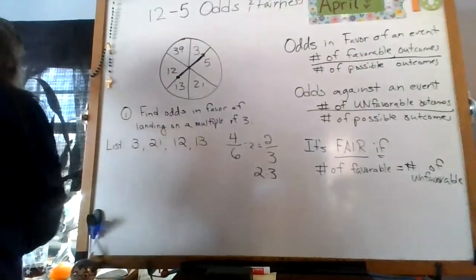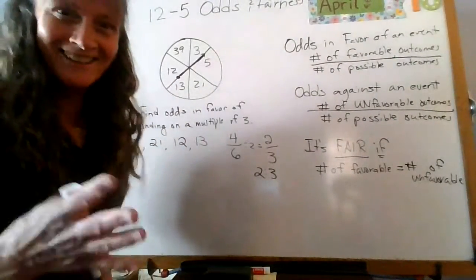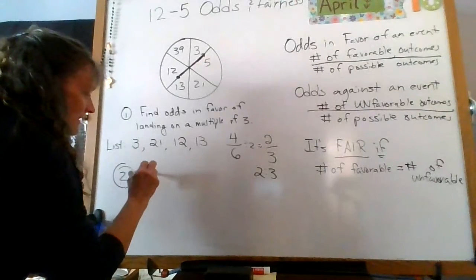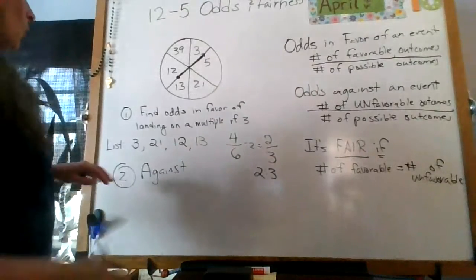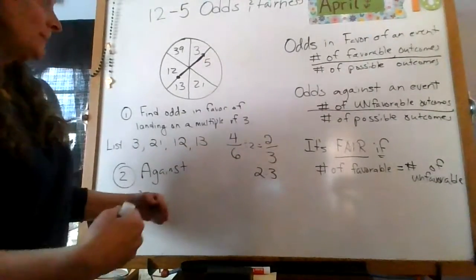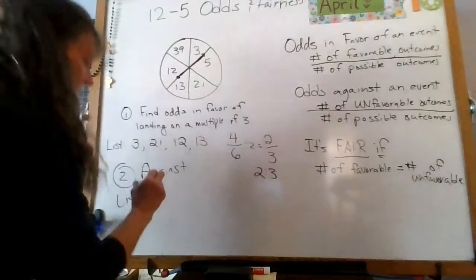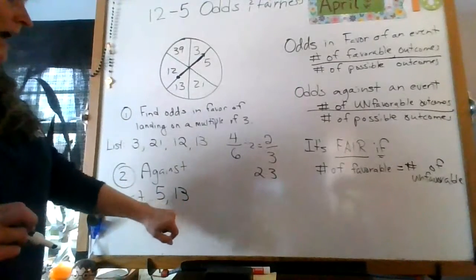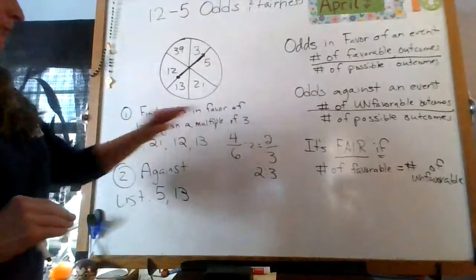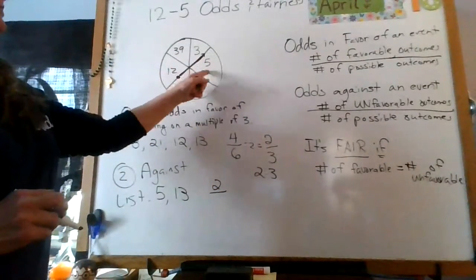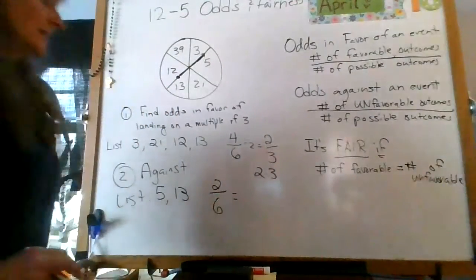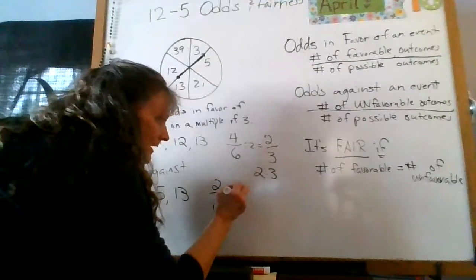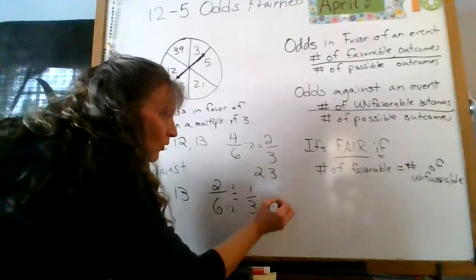Now find the odds against landing on a multiple of three. The numbers that are NOT multiples of three are five and thirteen — so I have two unfavorable outcomes out of six possible. Two out of six — ask yourself what you can divide both by. Divide by two and you get one-third, or one to three.